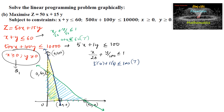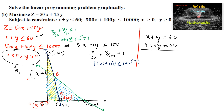The common feasible region has corner points: origin O = (0, 0), point A = (20, 0), point C = (0, 60), and point B which is the intersection of the two lines. Solving x + y = 60 and 5x + y = 100 simultaneously gives 4x = 40, so x = 10 and y = 50. Therefore point B = (10, 50).